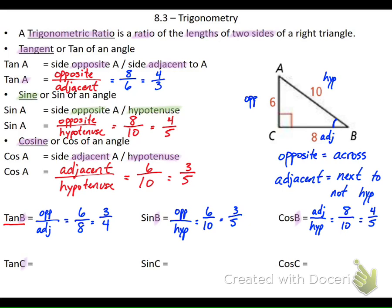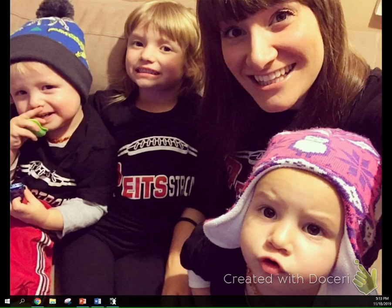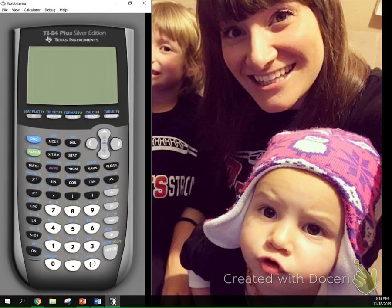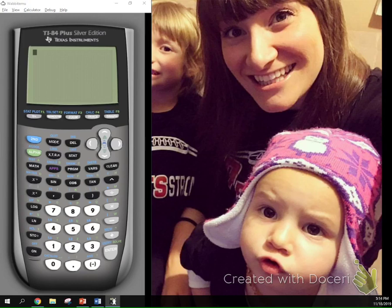The last set is tangent of C, sine of C, and cosine of C. Angle C is the right angle. You need to know that you can't use trig ratios with 90-degree angles, so these we can't do. What these trig ratios help us do is, using our calculators, solve for sides. The first thing you want to make sure is that you have your calculator in degree mode. Turn on your calculator, hit the mode button, go down and make sure that instead of radians, you put it in degrees and hit enter so degrees is lit up.